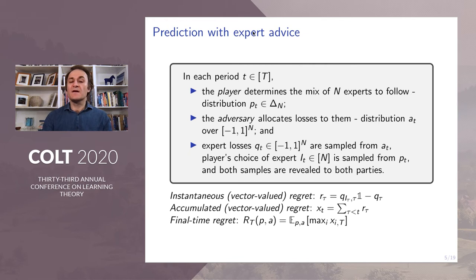In this context, the instantaneous vector-valued regret r_tau tracks the difference between the loss of the player in prediction period tau minus the loss of each expert. The accumulated regret x_t is simply the sum of the instantaneous regrets r_tau for all previous periods. The final time regret is the largest entry of x_final evaluated in expectation over the player and adversary's randomization.